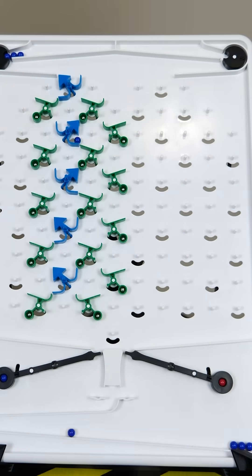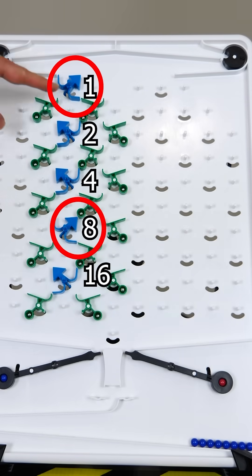If we use binary counting, we can count the number of balls that pass through. You can see just from reading this, there were 9 balls, 8 plus 1.